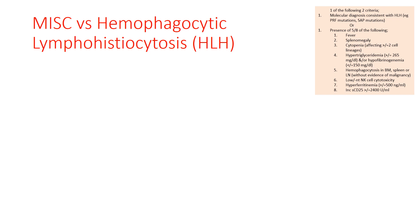The 8 HLH criteria are: fever, splenomegaly, cytopenias affecting more than or equal to 2 cell lines, hypertriglyceridemia and/or hypofibrinogenemia (very important), hemophagocytosis evidence in bone marrow, spleen, or lymph node, low or absent NK cell cytotoxicity, hyperferritinemia, and increased soluble CD25 more than or equal to 2400 units per ml. HLH can be primary (familial HLH) or secondary — for example, infection-associated HLH or malignancy-associated HLH.